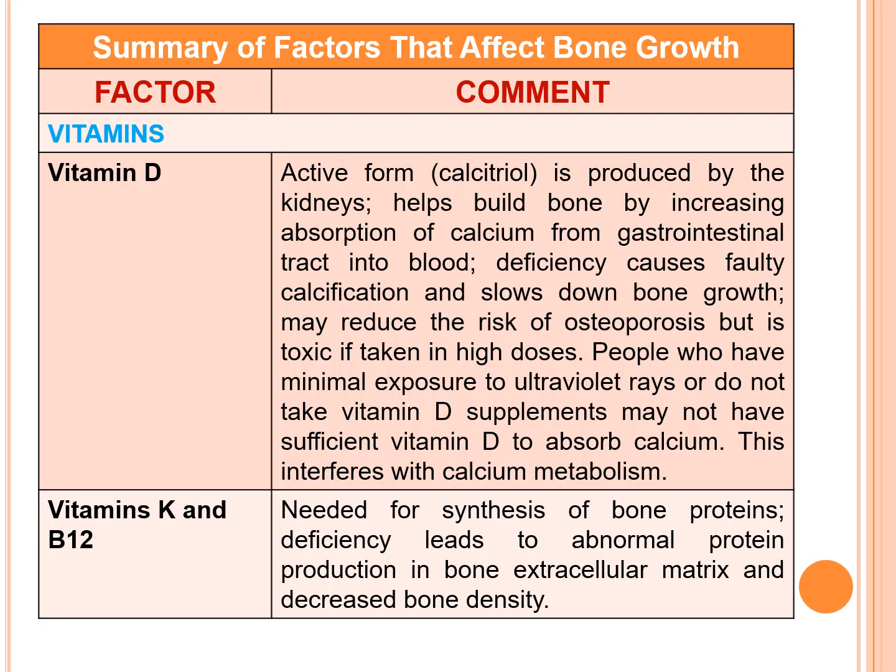Next coming to vitamin D. The active form of vitamin D is calcitriol, and it is produced by the kidneys. It helps build bone by increasing the absorption of calcium from the gastrointestinal tract into the blood. Deficiency causes faulty calcification and slows down the bone growth, and may reduce the risk of osteoporosis, but is toxic if taken in high doses.